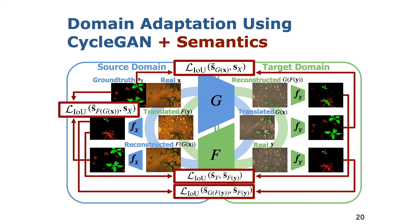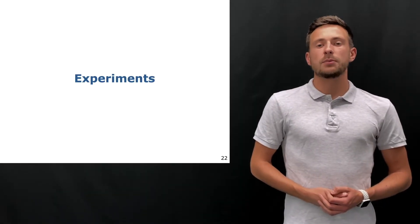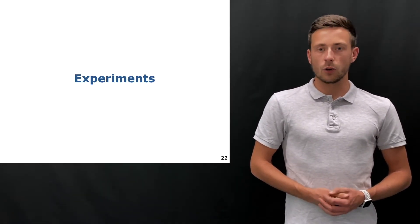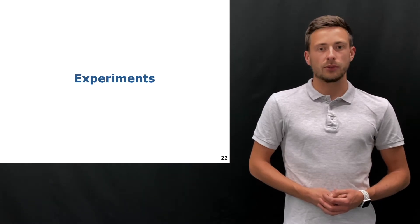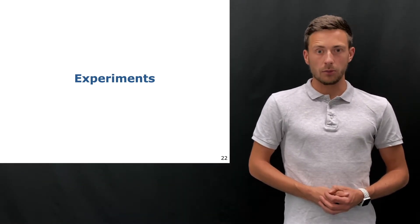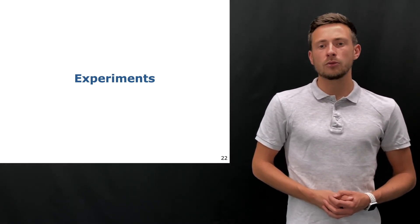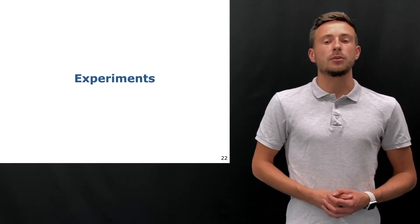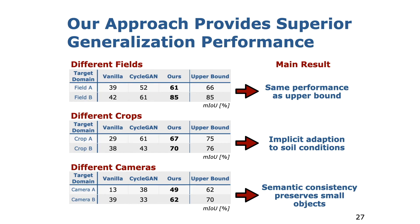We include the two domain-specific FCNs into the training process and compute additional semantic losses that finally add to the overall training objective. We carry out experiments on a wide range of real-world datasets showing different types of crops and weeds. The image sets were acquired using farm robots as well as UAVs with different camera setups each. The quantitative results show that the vanilla baseline fails on all target domains, indicating the need for domain adaptation methods.